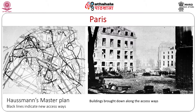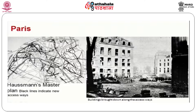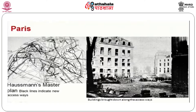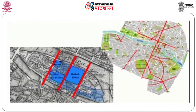Haussmann outright demolished large numbers of buildings, creating large passageways and roads leading all the way to the Arc de Triomphe and other Parisian landmarks and monuments. Here you have the restructuring map of Paris, where the black lines indicate new access ways reaching the arterial roads. To build these access ways, several buildings were brought down.